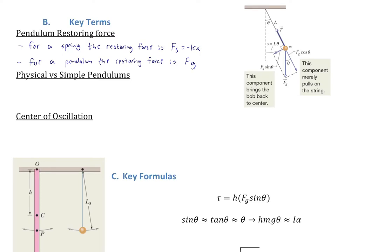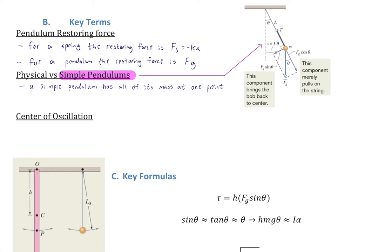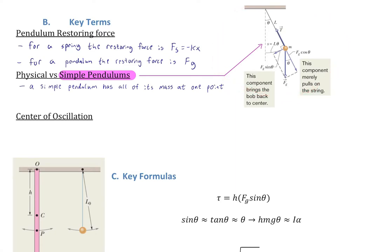Let's remind ourselves of the difference between physical and simple pendulums. A simple pendulum has all of its mass at one point — the mass m represents the entirety of its mass, hanging from a string or cord of negligible mass. The mass is treated as a single point mass. It's an idealization or simplification.